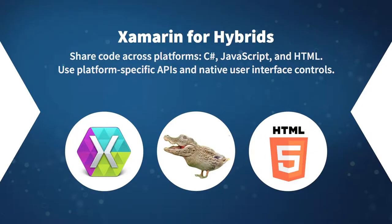Xamarin has a lot to offer for hybrids. The key advantage is the great C# development experience that works across all platforms. You can share all of your C# code, all of your HTML, and all of your JavaScript. There are platform-specific differences in how you facilitate communication between HTML and C#, and platform-specific native UI elements will need to be platform-specific. But you can share a ton of code by building a hybrid app that uses C# for your underlying data, native controls for your main UI, and HTML for data presentation in certain contexts. You can use platform-specific APIs, native UI controls, and HTML all at the same time.